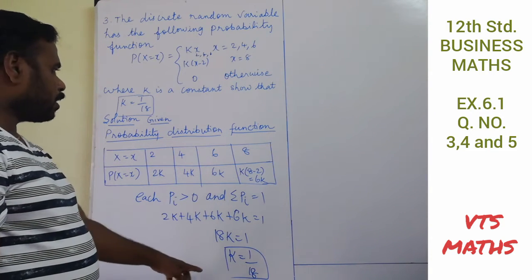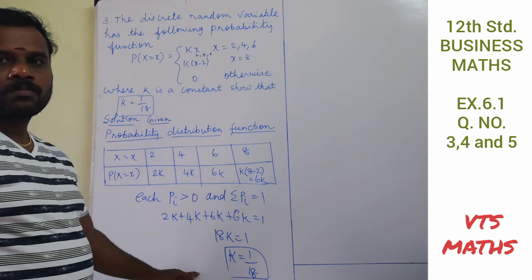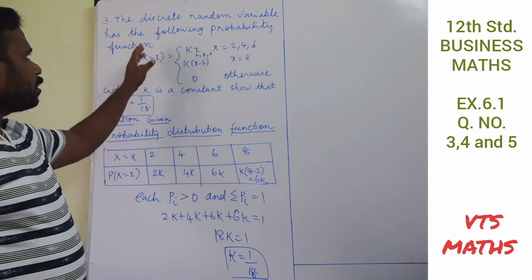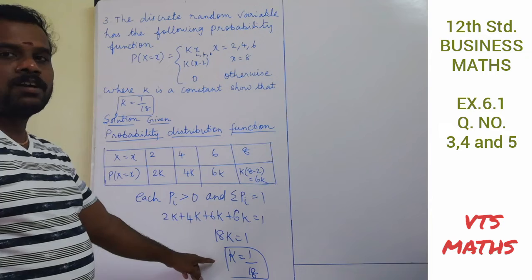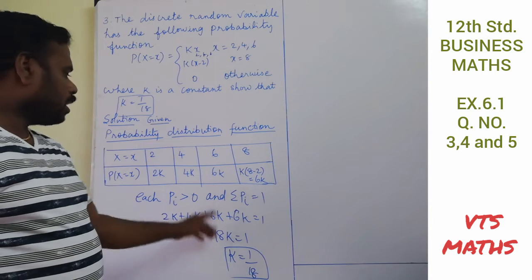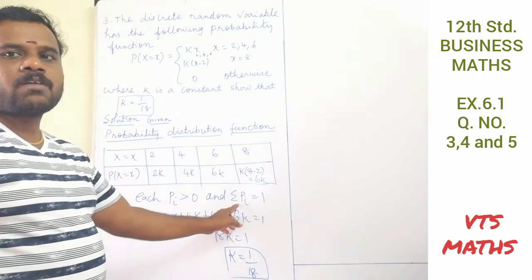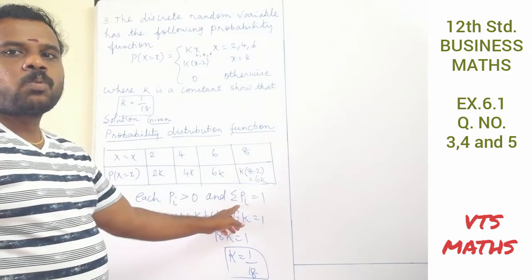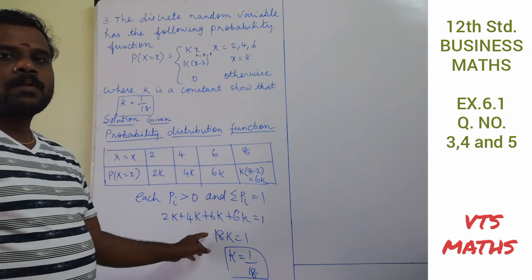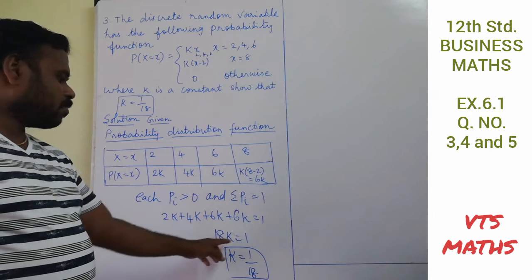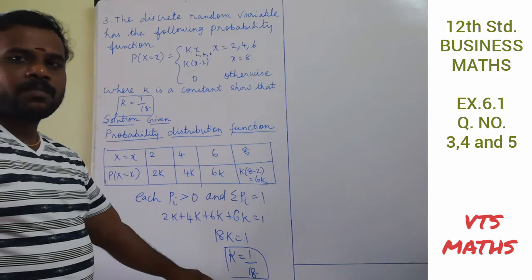We have proved the question: the probability distribution satisfies both conditions — each probability value is greater than 0, and the sum of all probability values equals 1. With 18k = 1, k is equal to 1/18.